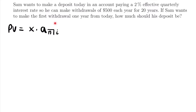Let's look at our problem and figure out what each variable equals. The payment amount X is $500, since Sam wants to make withdrawals of $500 each year. There will be 20 of those withdrawals, one each year for 20 years, so N, our number of payment periods, is equal to 20, measured in years.